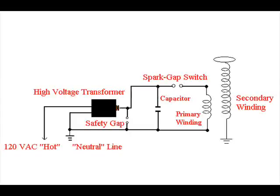Now let's take a closer look at the basic circuit for a Tesla coil. A Tesla coil consists of six basic parts: a high voltage transformer, a capacitor, a spark gap switch, primary winding, secondary winding, and a safety gap. The safety gap protects the transformer from high frequency kickback and voltage spikes.